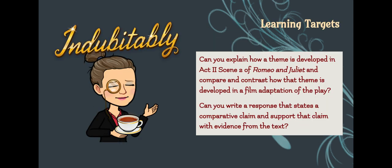Here are the learning targets for this lesson. Can you explain how a theme is developed in Act 2, Scene 2 of Romeo and Juliet, and compare and contrast how that theme is developed in a film adaptation of the play? And can you write a response that states a comparative claim and supports that claim with evidence from the text?